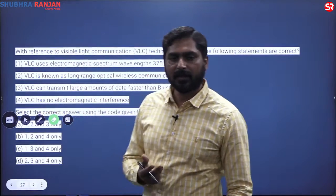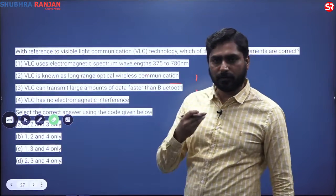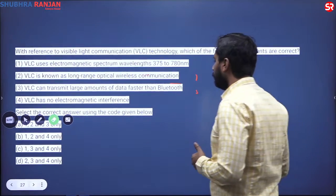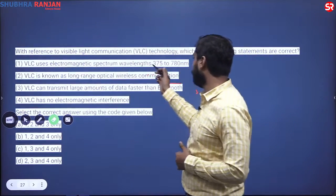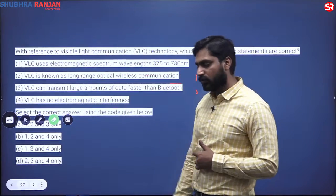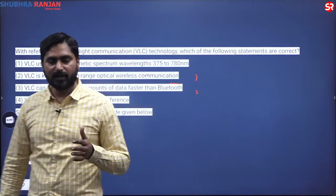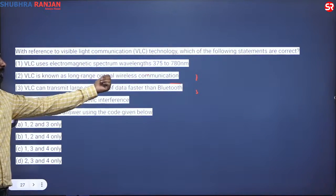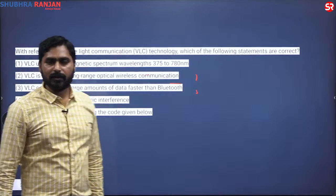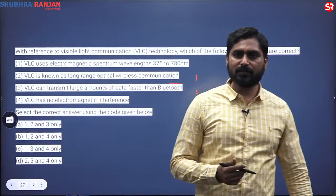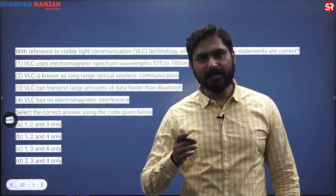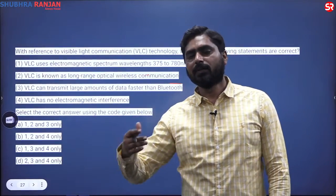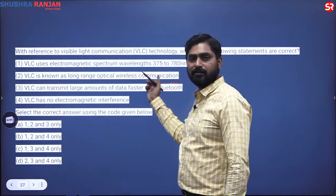The first statement says VLC uses electromagnetic spectrum wavelengths of 375 to 780 nanometers. You might not know this exactly. The second statement says 'VLC is a long-range optical wireless communication.' Can light be used for long-range purposes? Light cannot cross opaque objects — it cannot cross walls or boundaries — so it cannot be used for long-range wireless communication. This second statement is wrong.